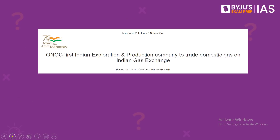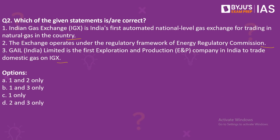According to an article in the PIB today, ONGC has become the first Indian exploration and production company to trade domestic gas on IGX or Indian Gas Exchange. IGX is India's first automated national level gas exchange, and it functions under the regulatory framework of the Petroleum and Natural Gas Regulatory Board. Statement 1 is correct. Statement 2 is incorrect — IGX functions under the Petroleum and Natural Gas Regulatory Board, not the Energy Regulatory Commission. Statement 3 is also incorrect because it is ONGC, not Gale India Limited, that is the first. So the right answer is option C.